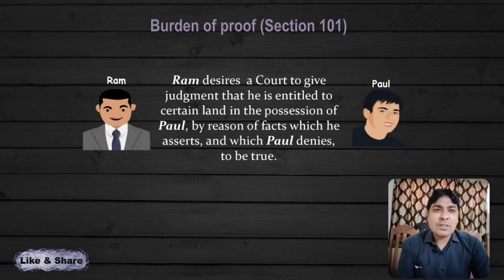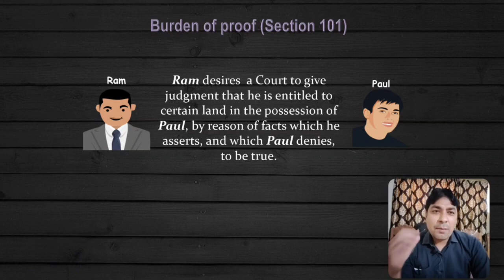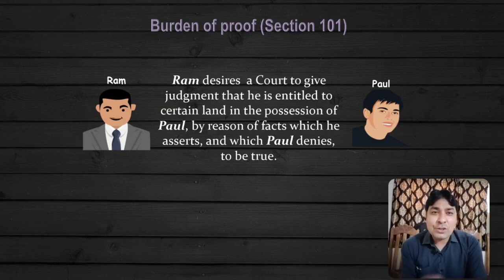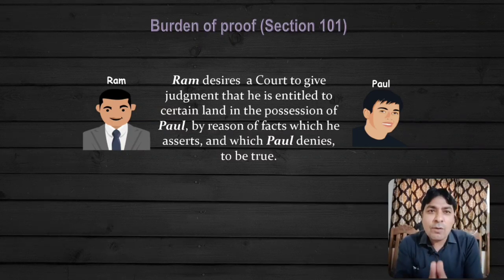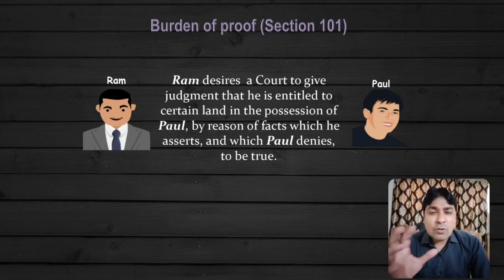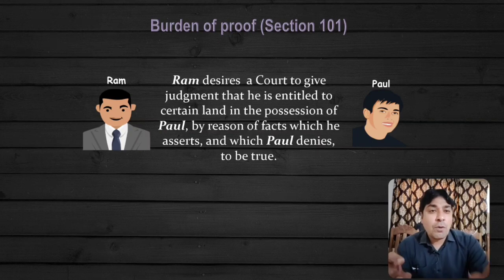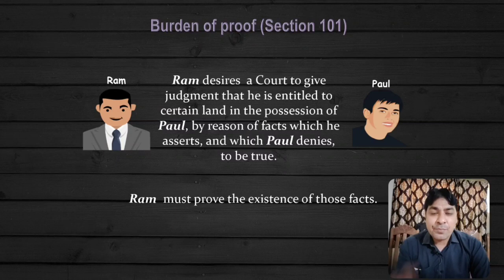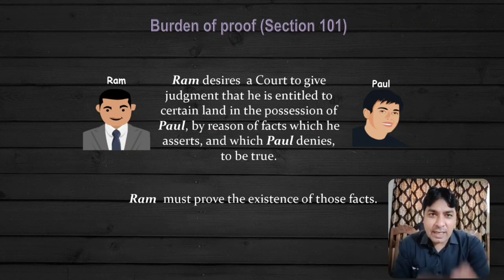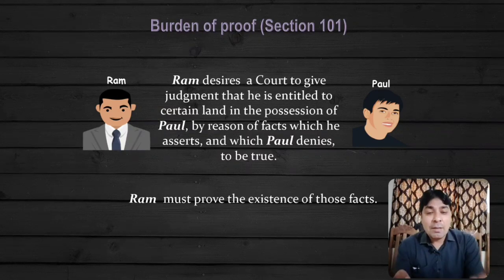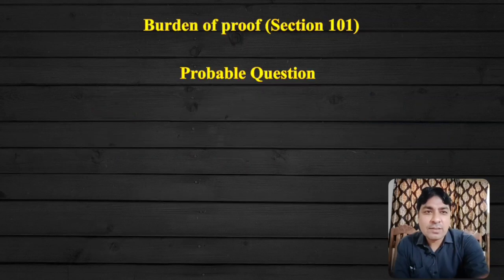Another example: Ram desires a court to give judgment that he is entitled to certain land in the possession of Paul, by reason of facts which he asserts and which Paul denies to be true. Ram wants to recover possession from Paul and as per Ram's contention, Paul's possession is unlawful. Ram filed a suit for recovery of possession against Paul. Paul denies the unlawful possession. Now Ram must prove the existence of those facts — that the possession of Paul is unlawful. Toh duty bhi Ram ki rahegi — burden of proof Ram pe rahega — Paul ka possession unlawful hai yeh prove karne ka.